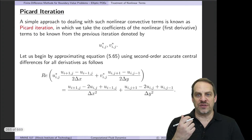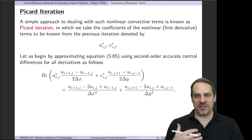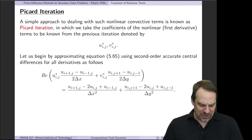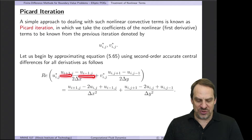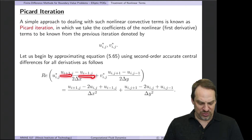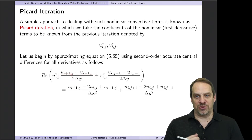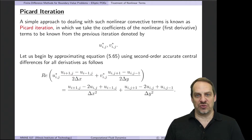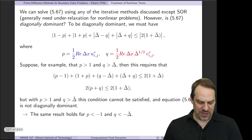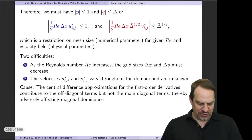Looking back at why diagonal dominance is lost: the second-order accurate central differences for the first derivatives contribute to the off-diagonal terms — the i+1 and i-1 terms — but not to the diagonal term. That is precisely the issue, giving rise to additional restrictions in order to maintain diagonal dominance.